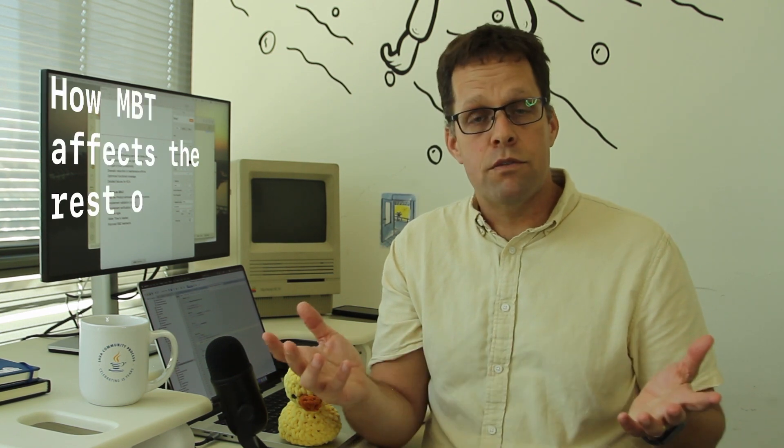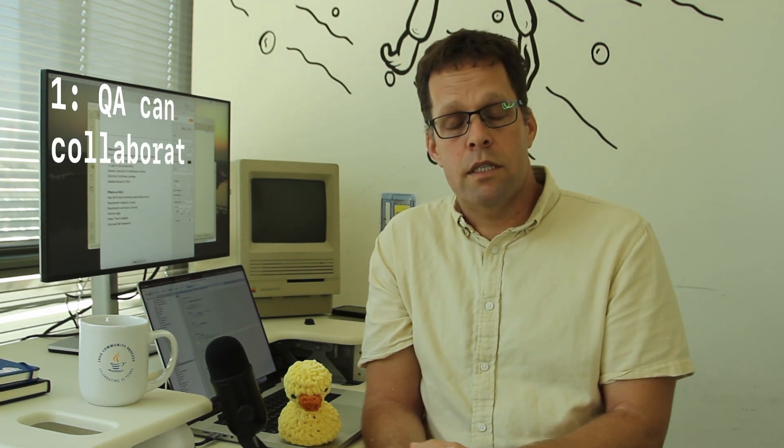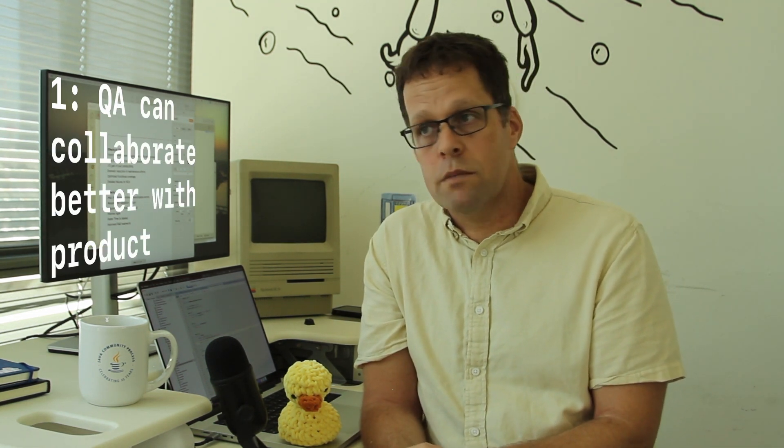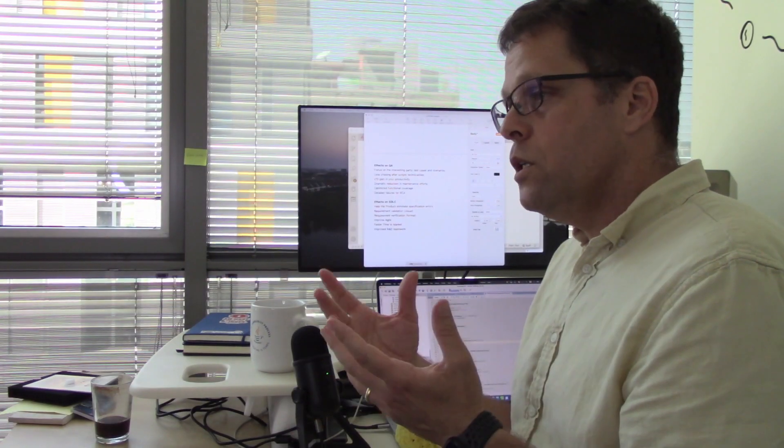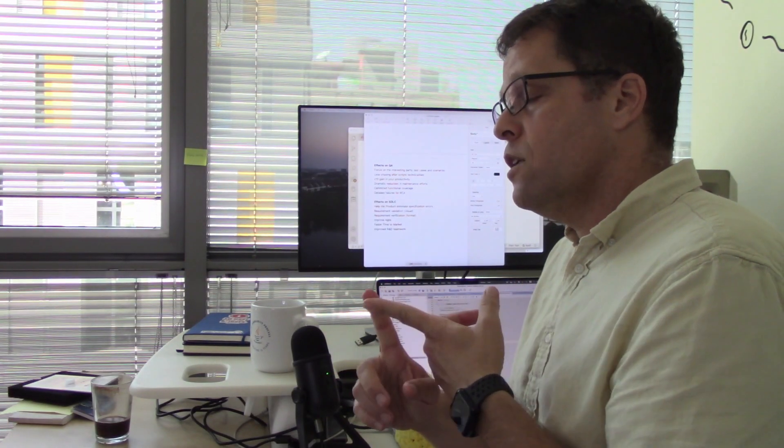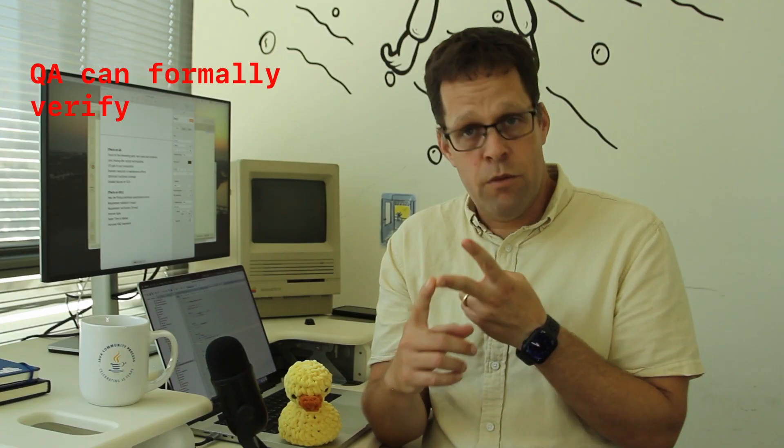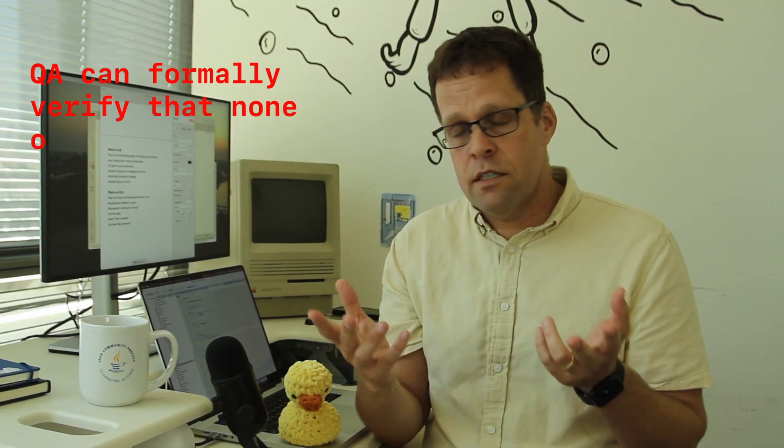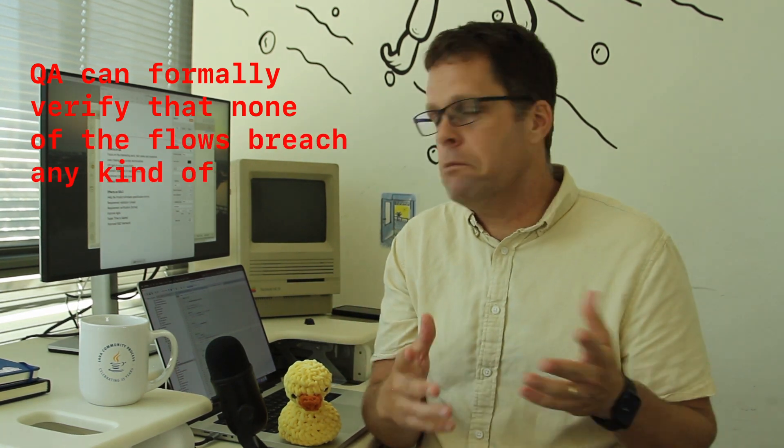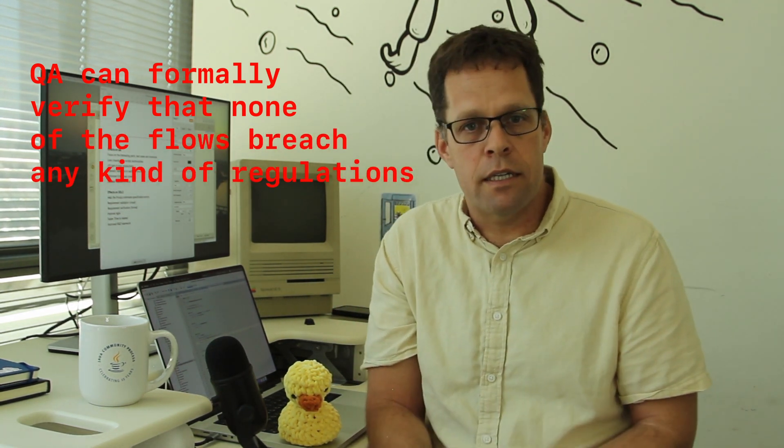So, we've seen how using MBT affects the work of the QA team. But how does it affect the rest of the software team? Well, first of all, now QA can collaborate in a much tighter fashion with the product because QA really holds an actionable model of the requirements, which is what product really works on. So QA can generate diagrams of business flows. And they can verify, like formally verify that none of the flows breach any kind of regulations or company guidelines or stuff like that.